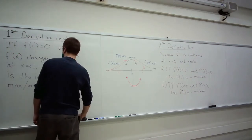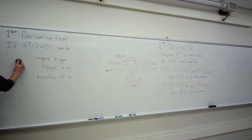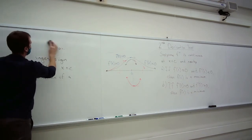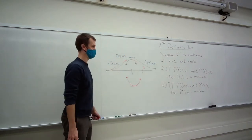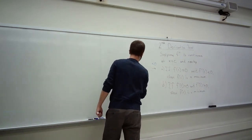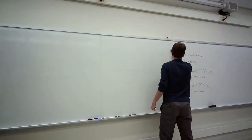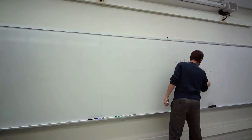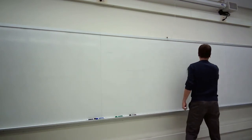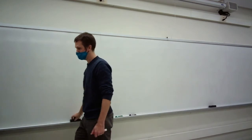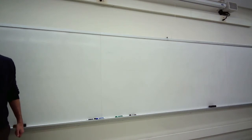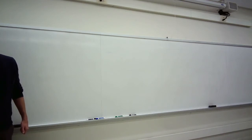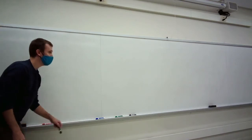Okay, so two alternatives for finding if something is a maximum or minimum value: the first and second derivative tests. That is it for section 4.3.